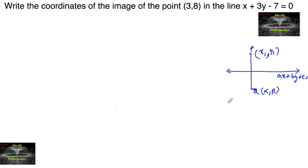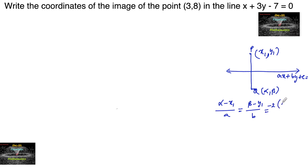Then we have: alpha minus x1 upon a is equal to beta minus y1 upon b, is equal to minus 2 times of (ax1 plus by1 plus c) upon (a squared plus b squared), where alpha comma beta is the image of the point x1 comma y1.